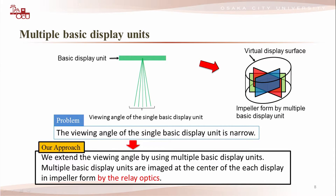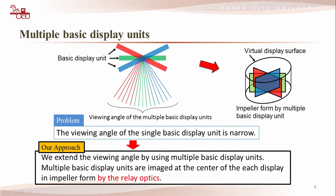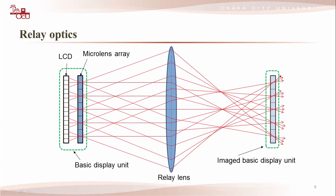But the viewing angle of the single basic display unit is narrow. So we extend the viewing angle by using multiple basic display units. The multiple basic display units are imaged at the center of each display in in-flow form by relay optics. It is not possible to overlap the actual displays physically, so we overlap the multiple basic displays in in-flow form by using relay optics.